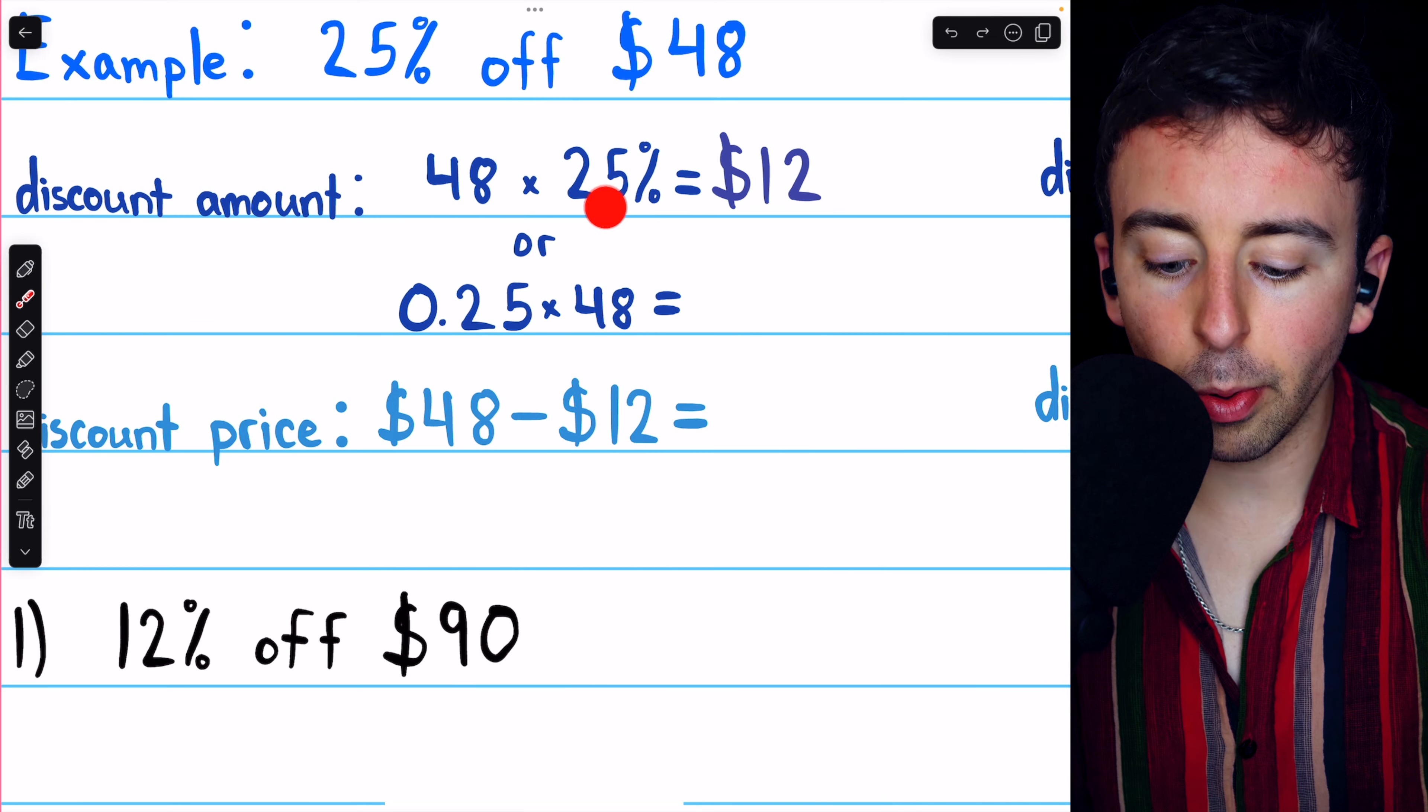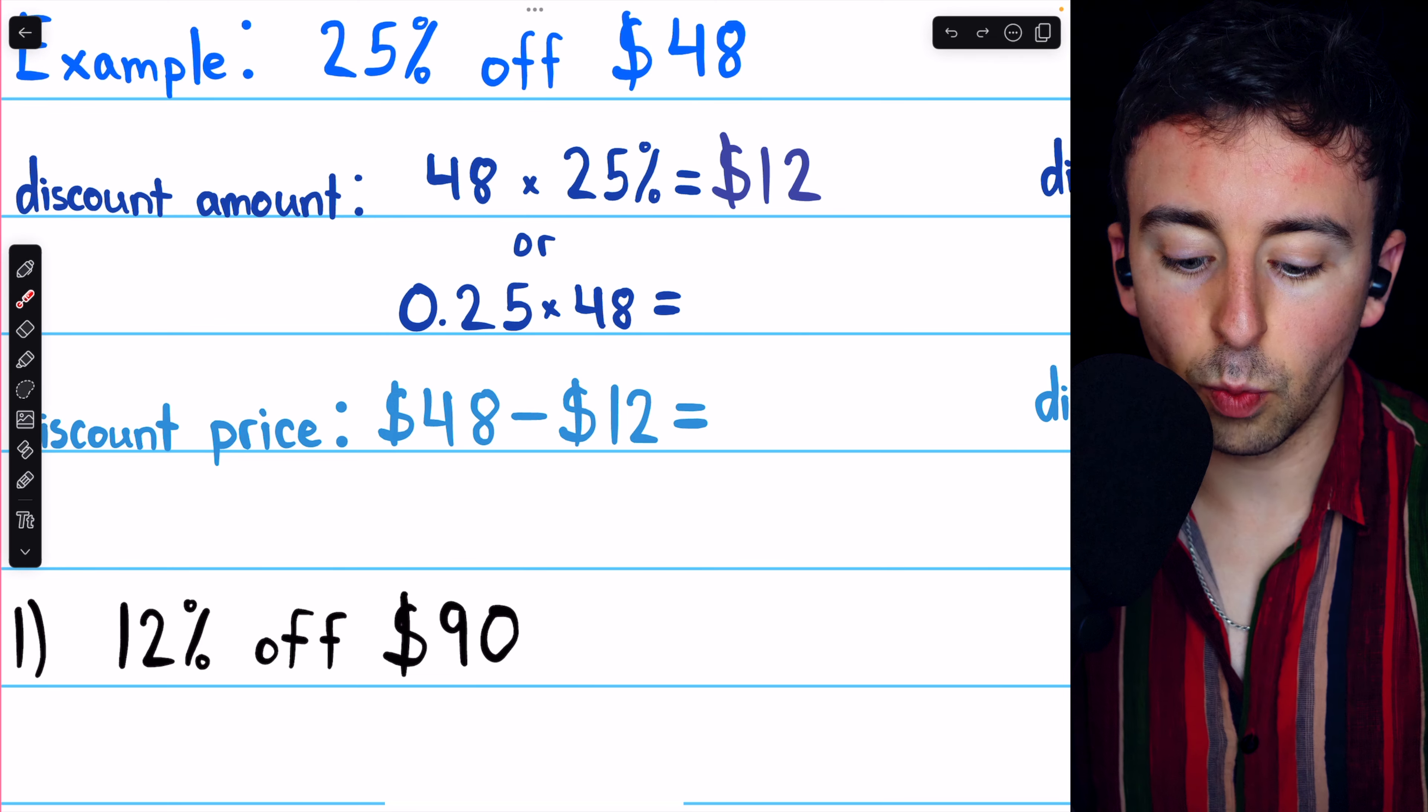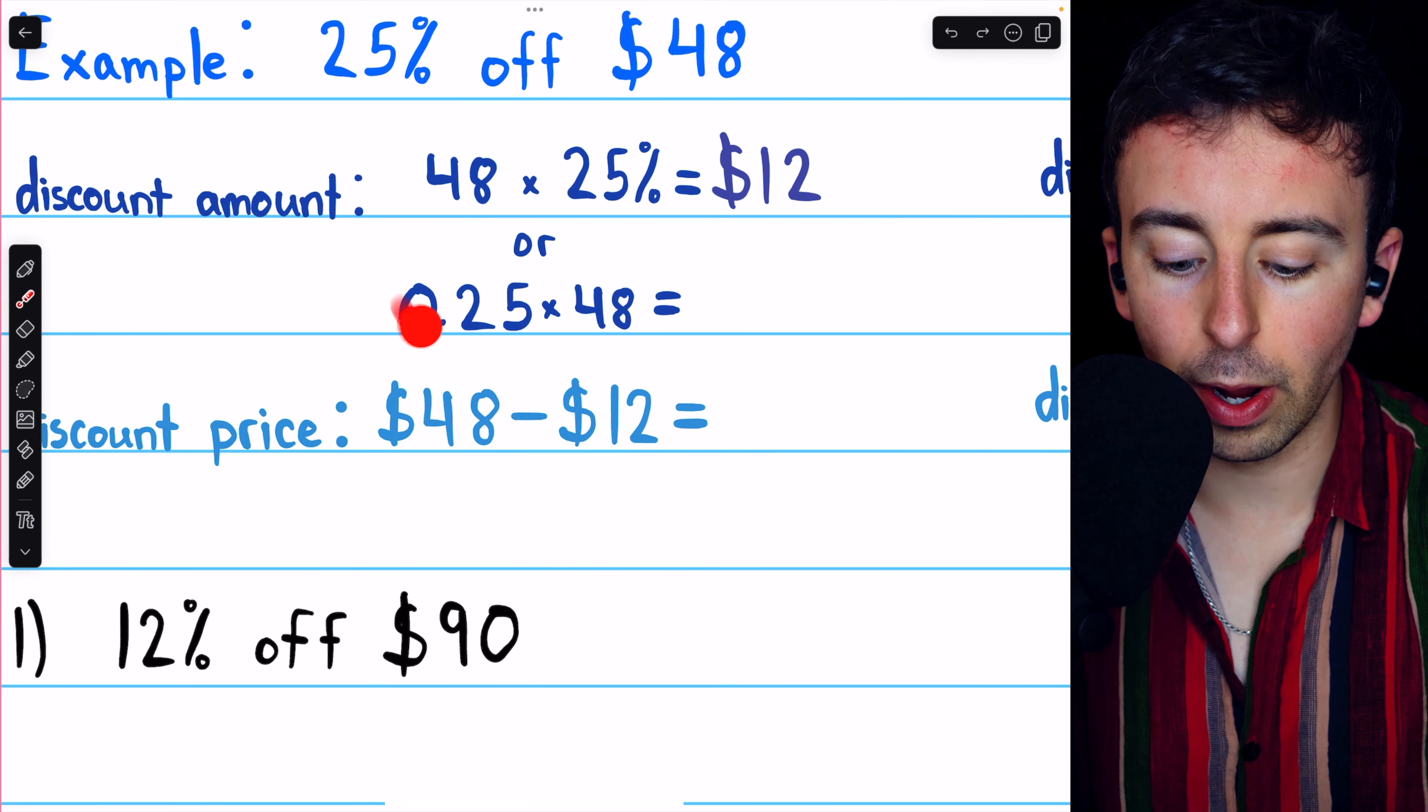That's because percent means per 100. So we're basically dividing by 100 to write the percent as a decimal. When we move that decimal point to the left two places, we get this decimal, 0.25.